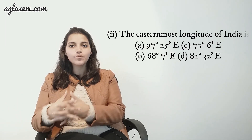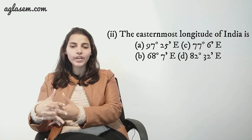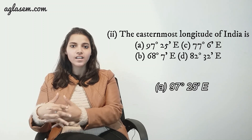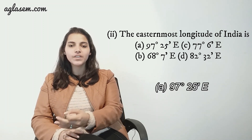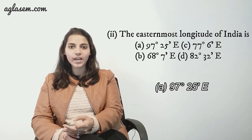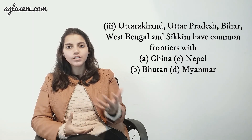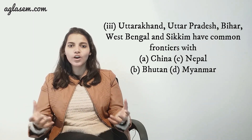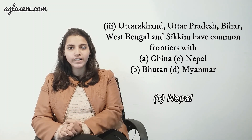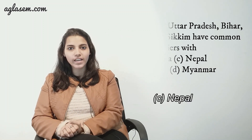Second: the easternmost longitude of India is — the answer is A, 97 degree 25 minutes east. Third: Uttarakhand, Uttar Pradesh, Bihar, West Bengal and Sikkim have common frontiers with Nepal.